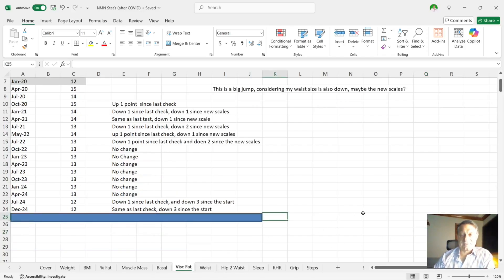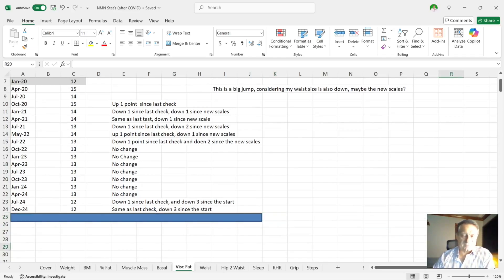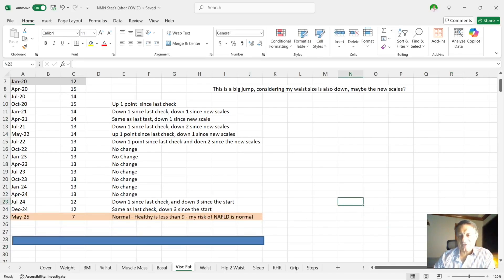Next is my visceral fat. This is something I really did want to get down. You can see there it's hovering between 12 and 13. The new scales I bought are supposed to be far more accurate, so this has changed quite a lot - gone from 12 all the way down to seven. Previously, when I've researched this, they've said visceral fat of 12 or under should be healthy. This scale has got me at seven and says anything less than nine is healthy, so I'm very happy it's seven and not nine. Also, with the app you get with this particular scale, it says my risk of non-alcoholic fatty liver disease is normal. I'm hoping that as I continue to exercise and lose weight, my visceral fat level will go down and hopefully my non-alcoholic fatty liver disease risk will also go down as well.